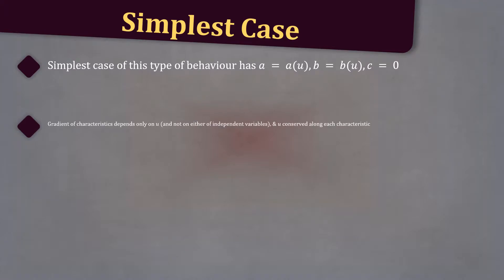The gradient of the characteristics depends only on u and not on either independent variables, and u is conserved along each characteristic.